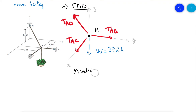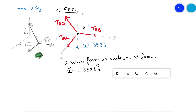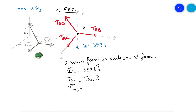Writing the forces in Cartesian notation: W is on the z-axis, so it's minus 392.4 k-hat. The tension TAC is on i-hat only, so it equals the magnitude of TAC times i-hat. TAB equals the magnitude of TAB and it's aligned with j-hat. Now we need to find TAD.